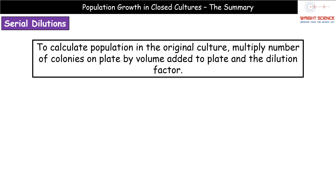If we get a question - these come up as maths-based questions - about how to calculate the population in the original culture, you take however many colonies you counted on the plate and multiply that by the volume added to the plate and by the dilution factor. For example, if the dilution factor was 10 and you did five dilutions, it would be 10 to the power of 5. So you might have counted 20 colonies, multiplied by 10⁵, multiplied by whatever volume was in the original flask, and that gives you your original culture size.